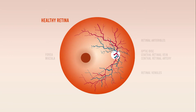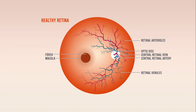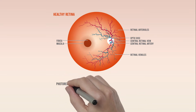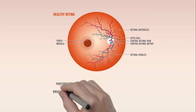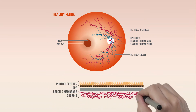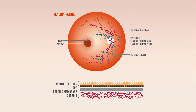In the healthy retina, an ophthalmologist or optometrist might observe a complication-free retina with blood vessels throughout the layers of the retina, which includes photoreceptors, the retinal pigment epithelium or RPE, Bruch's membrane, and the choroid or vasculature below, all lining up neatly.